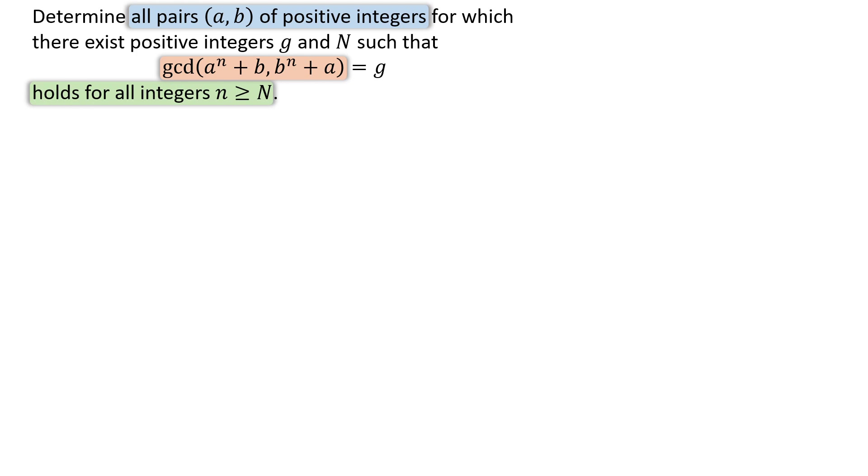Let's try to plug in some values for a and b. First, we consider both a and b equal 1. Both expressions become 1 to the n plus 1. They always simplify to 2, so GCD is always 2 and it stays constant for every integer. Therefore, a equals 1 and b equals 1 is a solution.